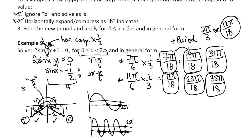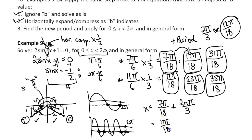For the general solution, you look at 7π over 18 and say plus every 2nπ over 3 — adding the period. Then do the same for 11π over 18, adding the period of 2π over 3 for any integer n. That covers all the 7π over 18 values and 11π over 18 values. That is the general solution.